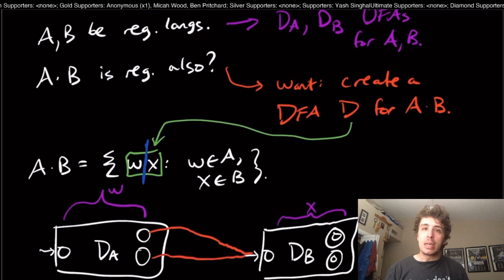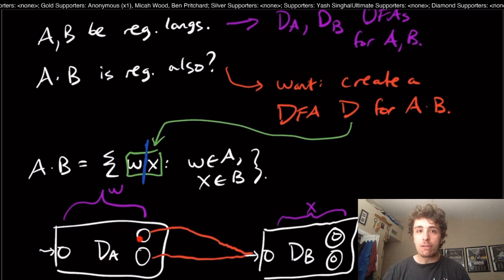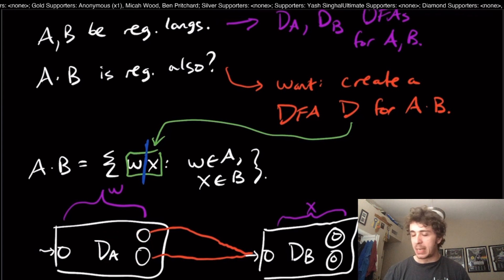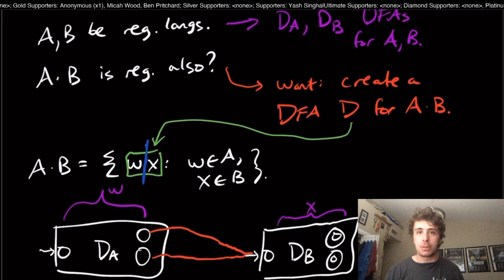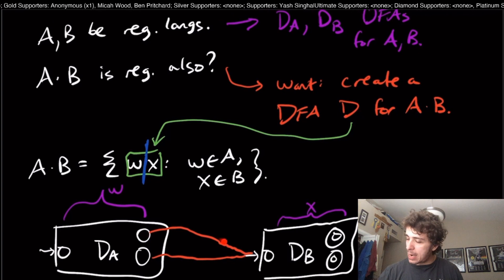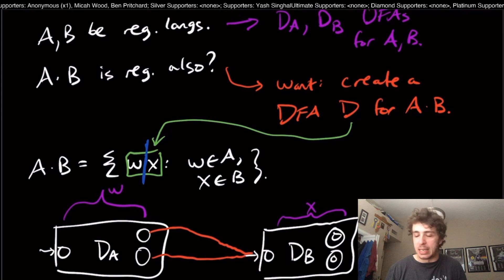The main reason is: this DFA already has every transition that it could ever use because it's a DFA. Every one of its states has every possible transition. So if I add another one like this, then I'm going to be breaking the rules of what a DFA actually is.